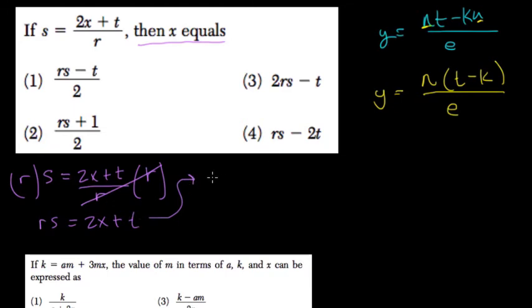We're almost done. rs equals 2x plus t. So we want x all by itself. So I would subtract t from both sides.